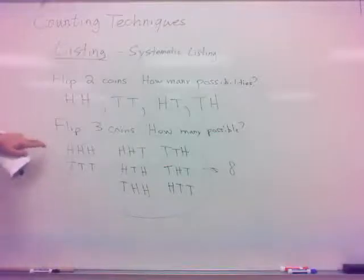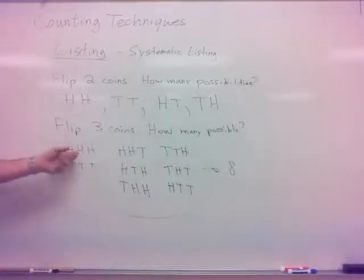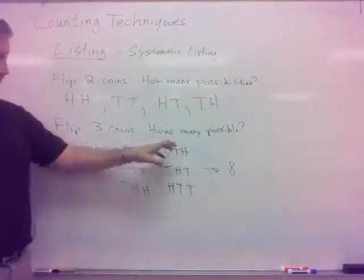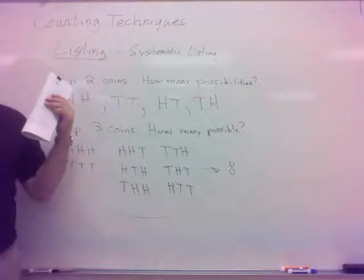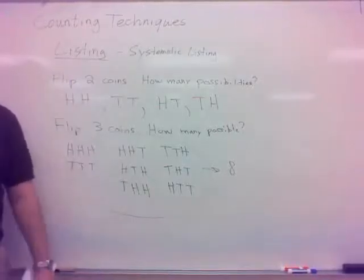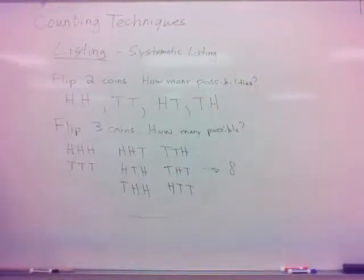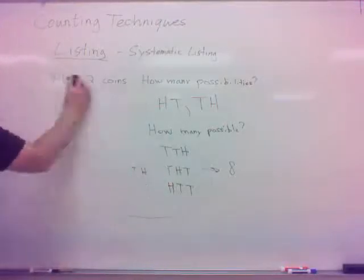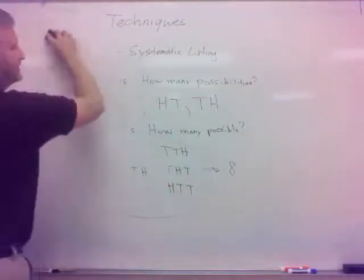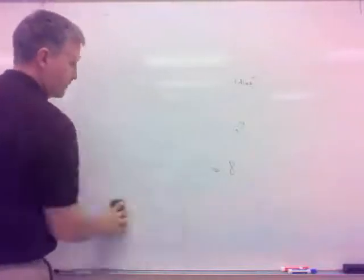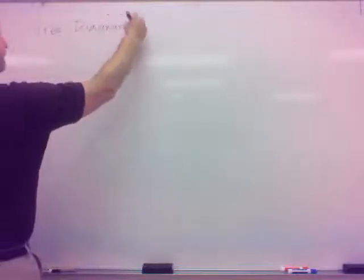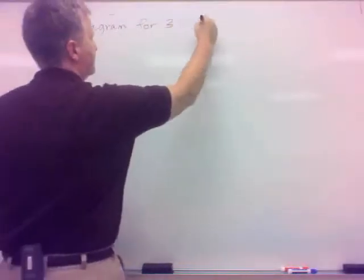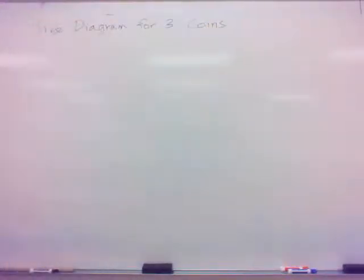Now let me mention here something else that the book might mention somewhere along the way. Let's do this same listing. Our system was we did the three heads, the three tails, and then we did the two heads and one tail, and then we did the two tails and one head. That was kind of our system there. Well, there's also another system that can be utilized. It'll help us in particular in one spot here when I get to it. Let me show you the tree diagram for three coins. It's called a tree diagram.